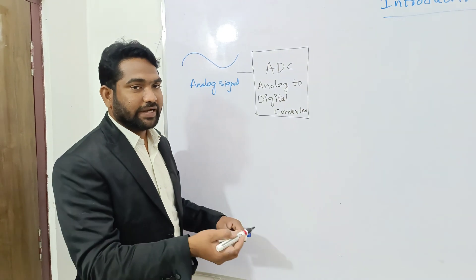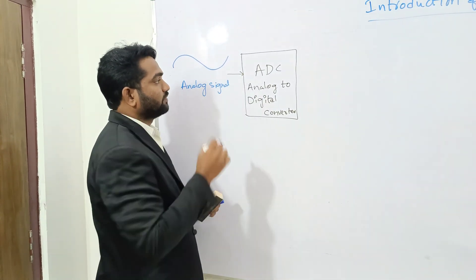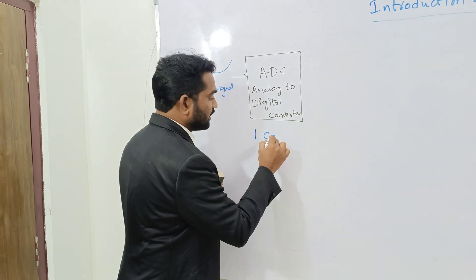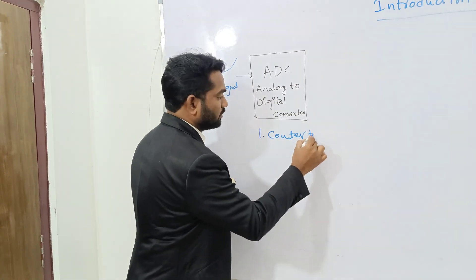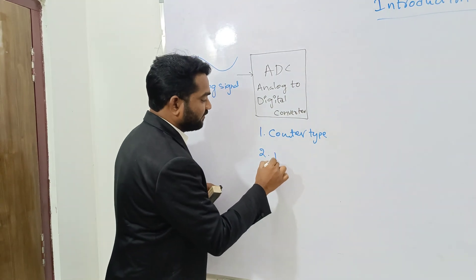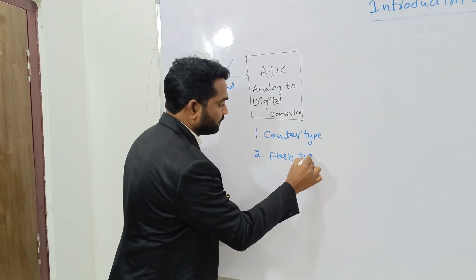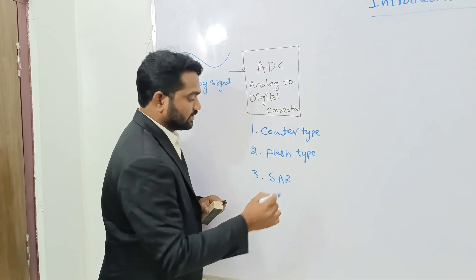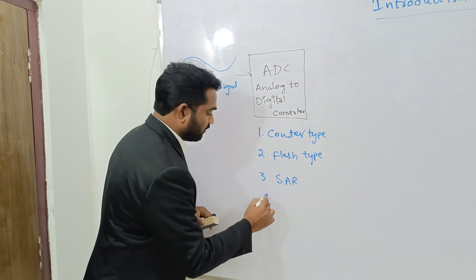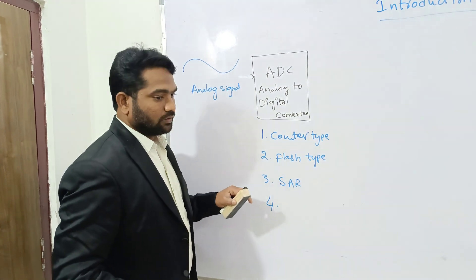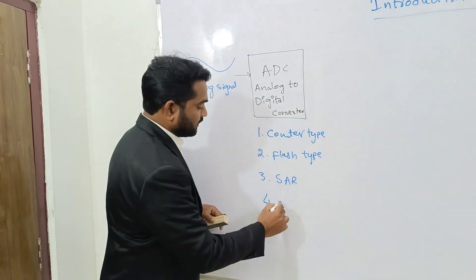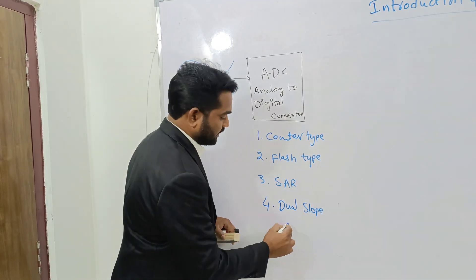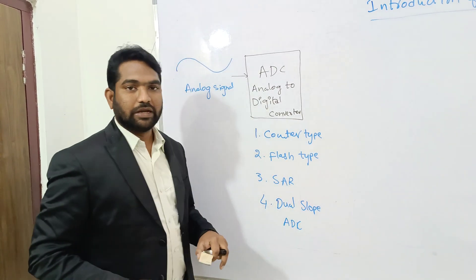This is a topic from unit four, which I told you in the previous lecture. We have four types of ADC. The first ADC is counter type ADC. The second one is flash type. The third one is SAR — Successive Approximation type. And the fourth one is dual slope ADC. These are the four types of analog to digital converters.